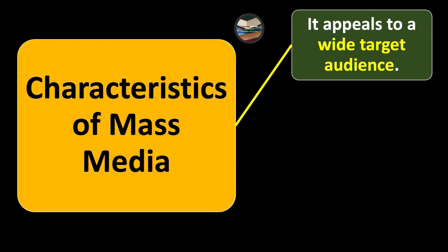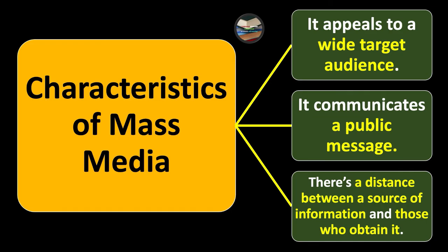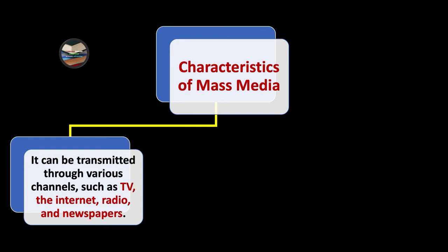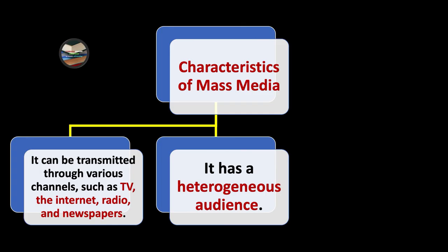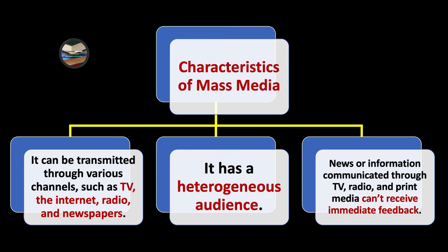Characteristics of mass media include: it appeals to a wide target audience and communicates a public message; there is a distance between the source of information and those who receive it; it can be transmitted through various channels such as TV, the internet, radio, and newspapers; it has a heterogeneous audience — coming from different social, economic, and political backgrounds; and news communicated through TV, radio, and print media cannot receive immediate feedback.